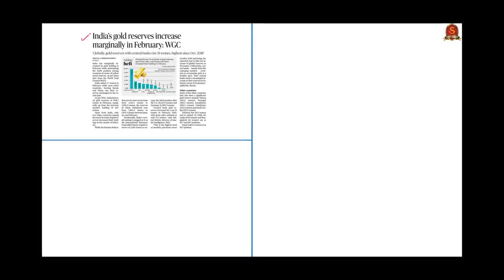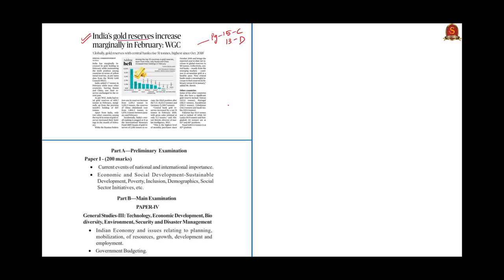The first news article for today's analysis talks about India's gold reserves, which appeared on page number 15 of the Chennai edition and page 13 of the Delhi edition. The aspects of this article can be covered under the UPSC Civil Service Examination syllabus in preliminary examination under current events of national and international importance and economic and social development, and in mains examination under GS Paper 3 under Indian economy and issues relating to planning, mobilization and government budgeting.